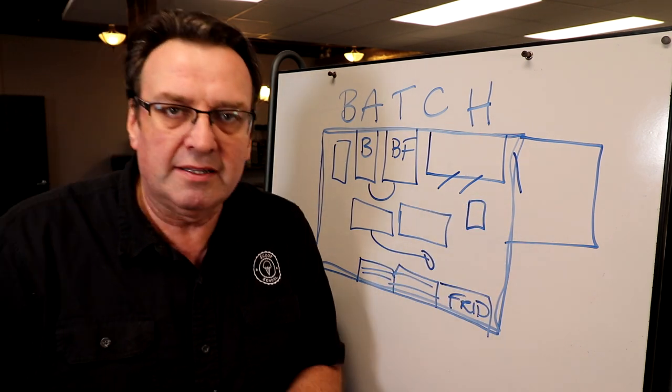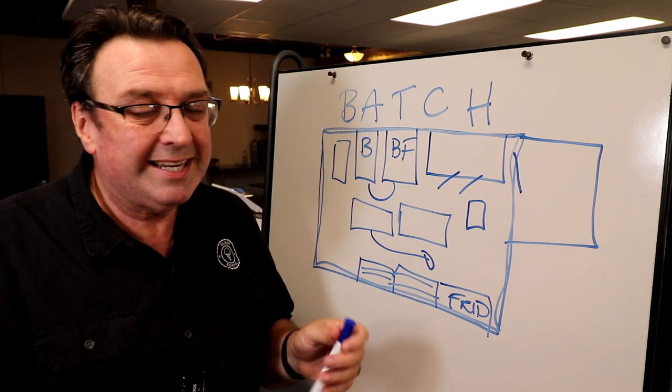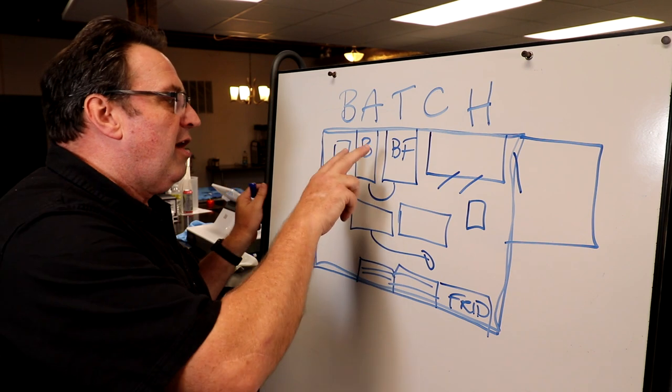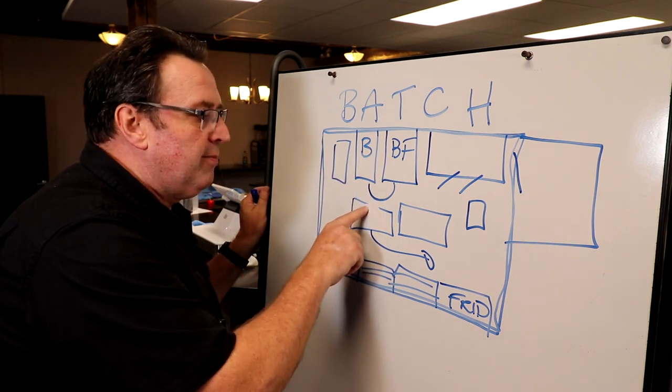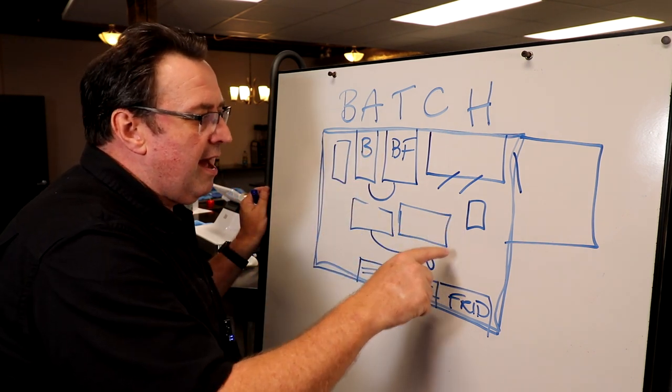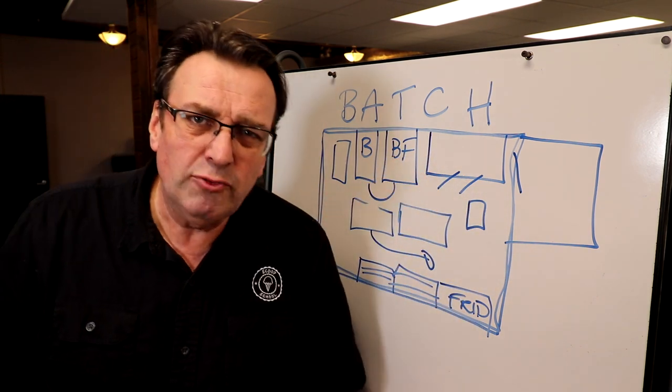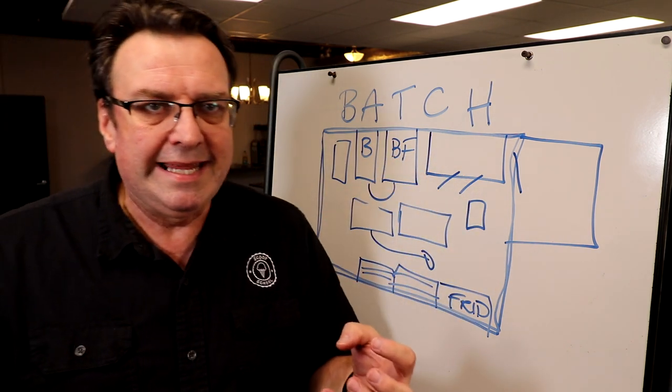They are really good for just moving product around. If I'm packing pints on this table, I can load them on the utility cart, put them in the blast, or bring them over to the storage freezer. So the idea is your production space needs to be as flexible as it can be around these focal points of the batch freezer and the blast freezer.